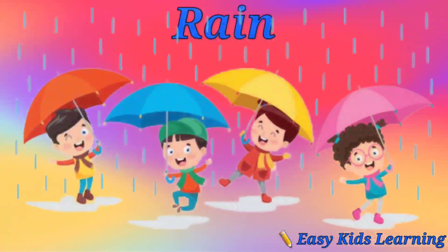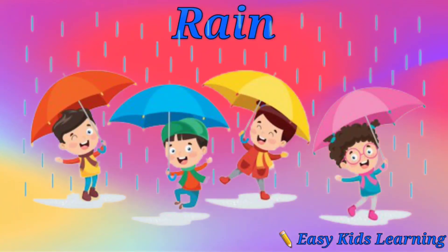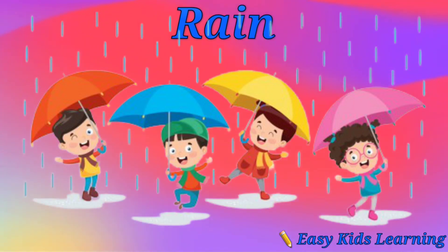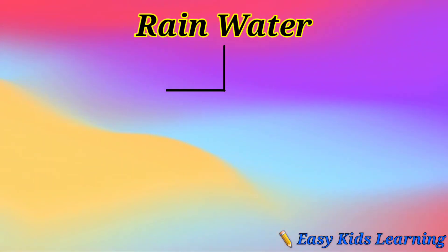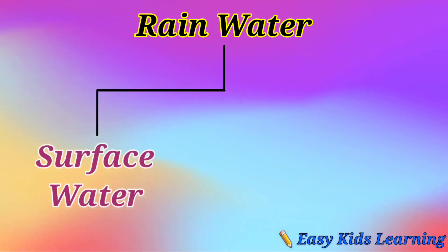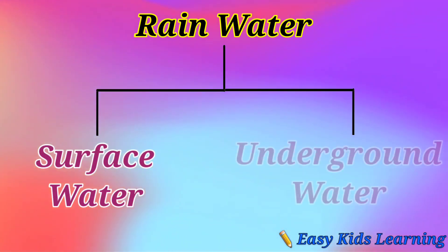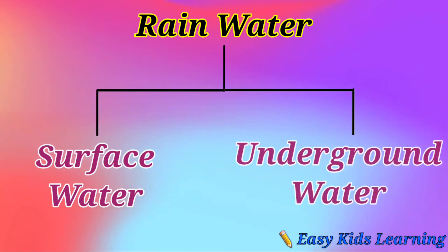Rain is the major source of fresh water from nature. Rain water is then collected into two main sources: surface water and underground water.